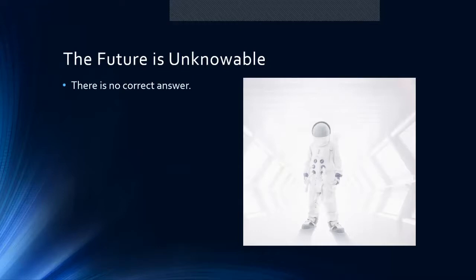We also have to get comfortable with the idea that there is no correct answer. Some of you are going to be uncomfortable with this, but the truth is in strategy there is no one correct answer. There are some answers that are better than others. When you do your strategic alternatives, you're going to come up with three to five alternatives for the organization your team selected, and eventually you'll have to determine which one is best — backed up with your research and data. Why is it the best? What advantages does it have? What disadvantages? What risk comes with it? So we need to get comfortable with there not being one correct answer.